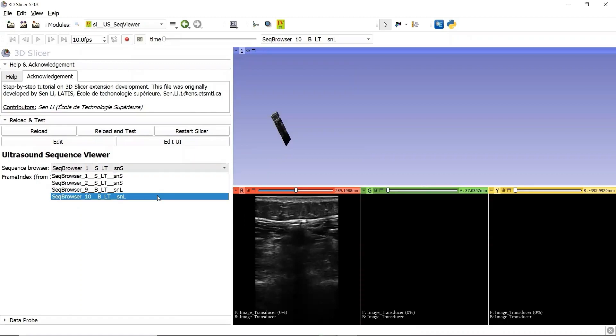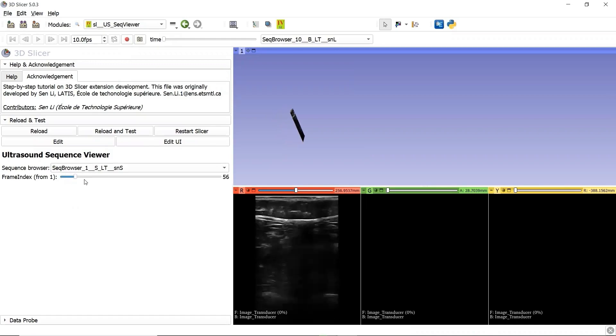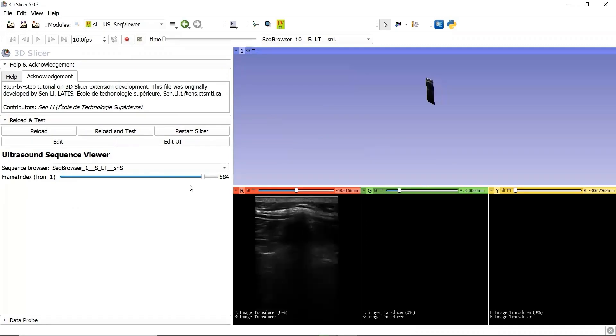In the Sequence Browser drop-down list, we can select the different Sequence Browser nodes. We are currently at Sequence Browser 1. The slider under the drop-down list helps us view the recorded ultrasound sequence, image by image, and step by step. And we can always see the current frame index from here.